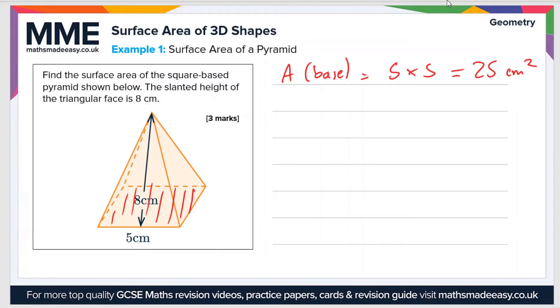And then next, we need to work out the area of one of the triangular faces. So the area of one face, it's just the area of a triangle, which is half times the base times the height. Now the base of the triangle is five centimeters. So it's a half times five. And the slanted height is what we're going to use. We've been given that as eight centimeters.